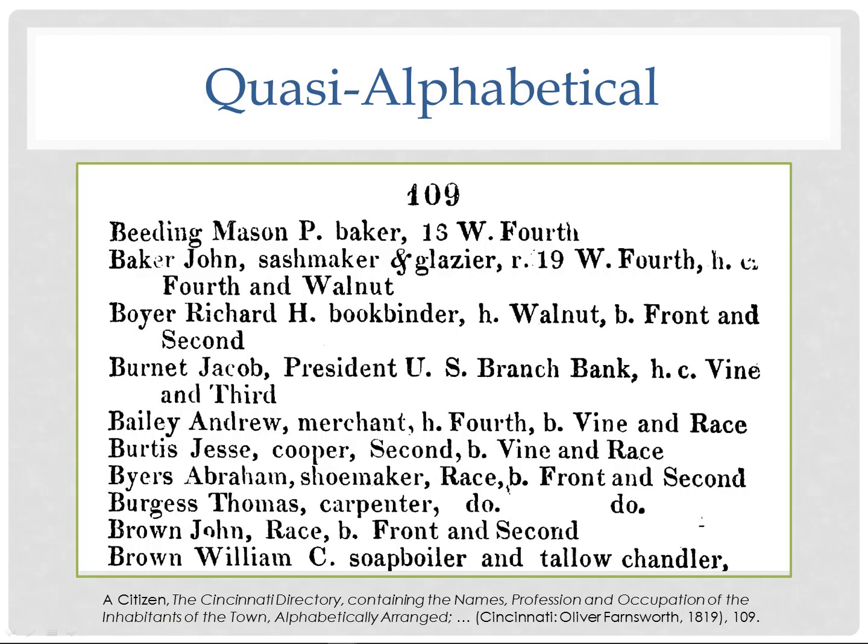Some older directories may not be in strict alphabetical order. Here's an excerpt from the 1819 Cincinnati city directory — all of the B's are grouped together, but they're not in strict alphabetical order. Please be careful when looking at older directories so that you don't overlook your ancestor.